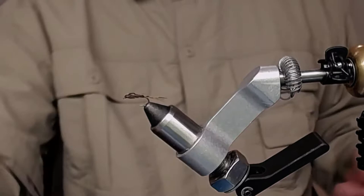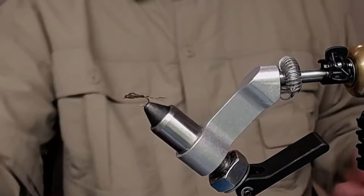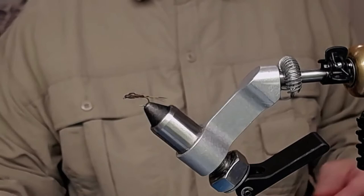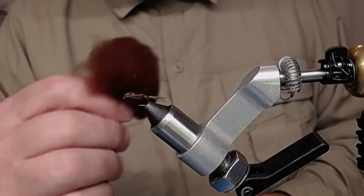We have this hook Dry Fly Supreme size 14 from Partridge. And we have a kind of brownish dubbing, free of choice, but to match the colors of the fly you are going to tie. And I used some dark brown tying thread.